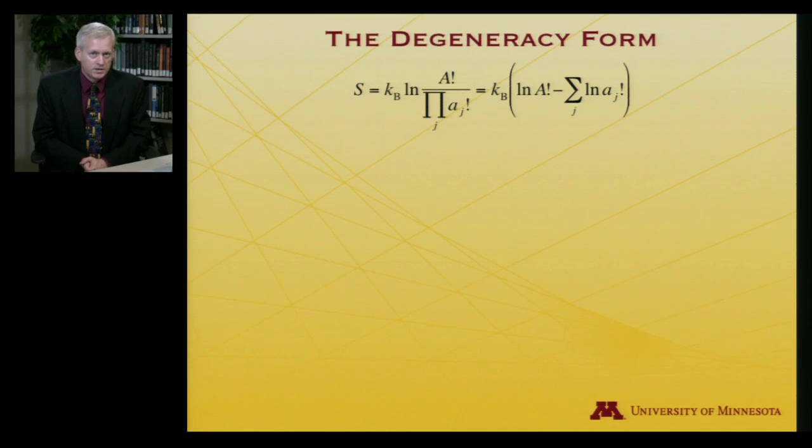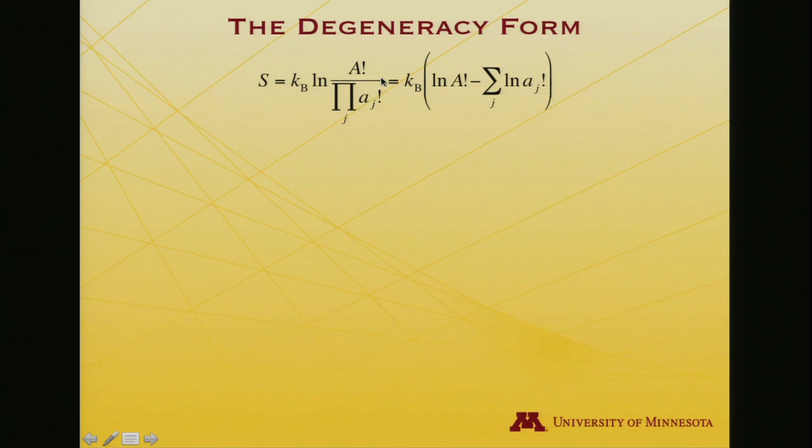I want to look at another way to express the entropy. This is known as the degeneracy form. Let me take this expression, S equals k log W. I've just written W out with all its factorials. And now I've got a log of a quotient. So that's a log of differences. It's log of the numerator minus log of the denominator.